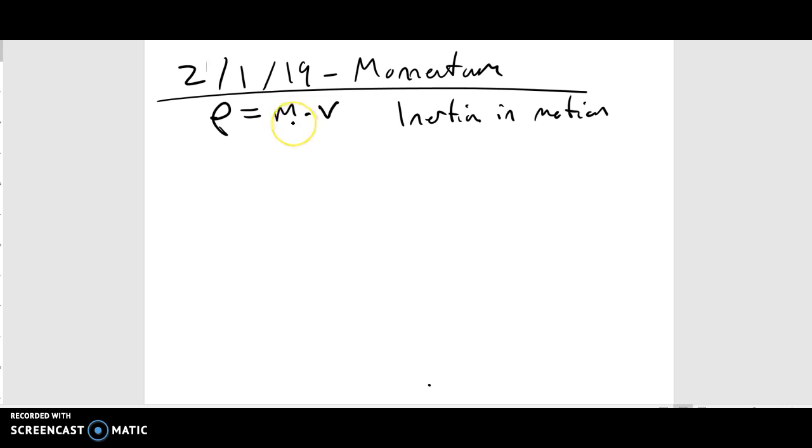And really what that means is the more massive you are, the harder it is to stop. This is if something is moving, or the faster it's going, if it has a higher velocity, it's harder to stop. Momentum is sort of a measure of how difficult something is to stop once it's moving.